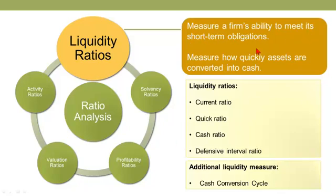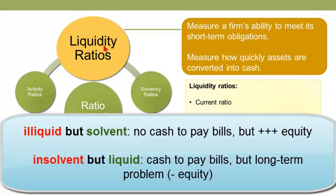Liquidity ratios measure a firm's ability to meet its short-term obligations. I'd like to focus your attention on short-term, because it helps us understand the difference between liquidity and solvency. We can view liquidity problems as an issue of timing or a temporary problem. It's possible to have a company that is illiquid but solvent — it has positive equity, so it's fine in the long run, but it can't pay the bills today.